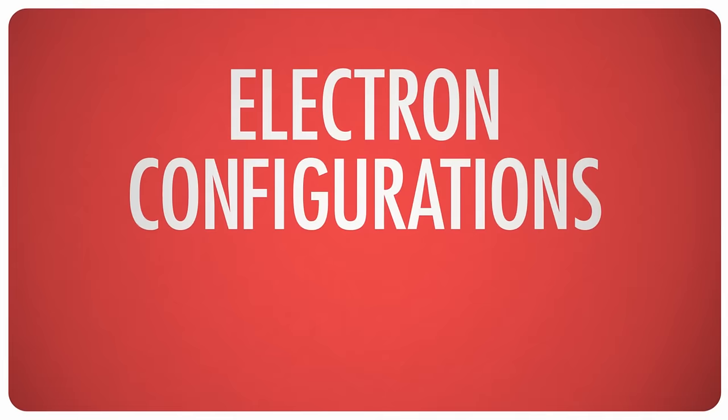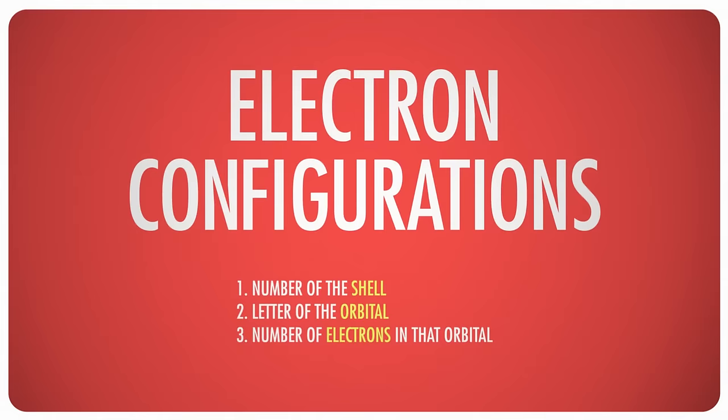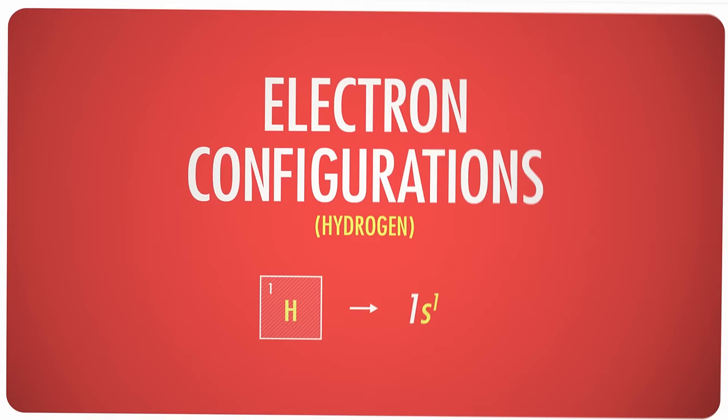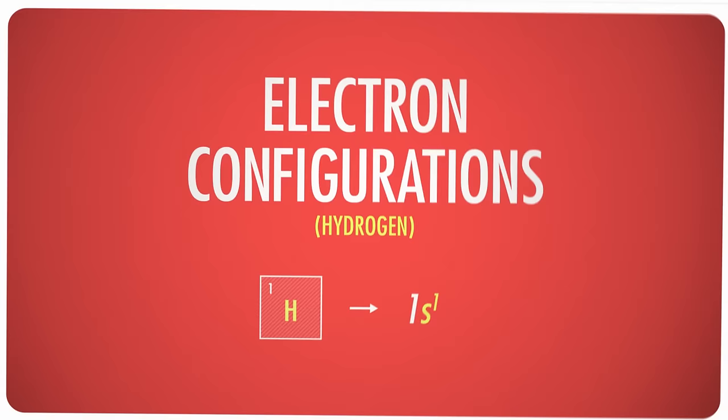And just like with music, there's a bit of notation to learn as well. It's important to know how to write out what we call electron configurations, a condensed way of showing exactly where all of an atom's electrons are. First, we write the number of the shell, then the letter of the orbital, then the number of electrons in that orbital, and repeat until we run out of electrons. So for hydrogen, with just one electron, it's 1s¹. For fluorine, it's 1s² 2s² 2p⁵.